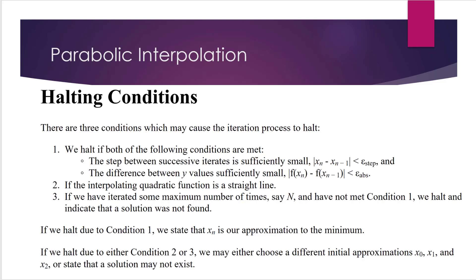Condition B is that the difference between y values becomes sufficiently small. That's the absolute value of f(x_n) minus f(x_{n-1}) is less than a constant called epsilon abs. So condition one is that we halt when this process converges.